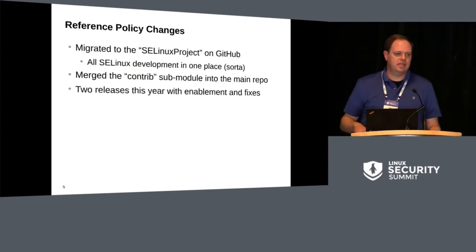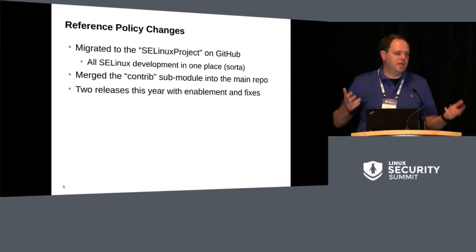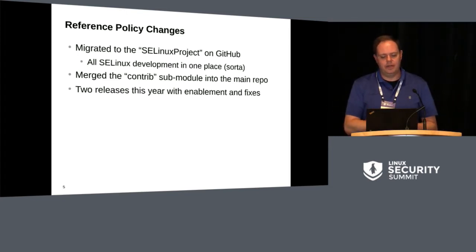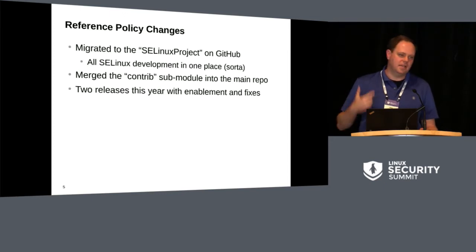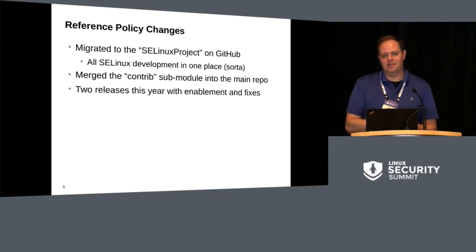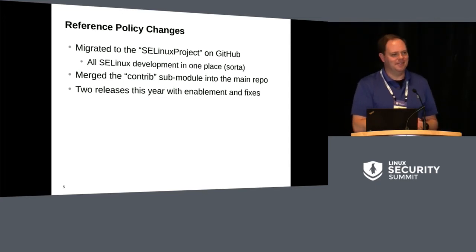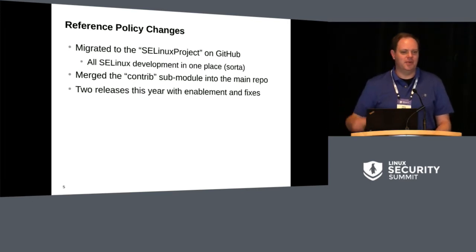As far as policy goes, probably the biggest thing is that the reference policy moved over to the SELinux project on GitHub. This is nice because we now have one central spot for all of our main SELinux upstream work. The kernel development still happens on kernel.org, but I do maintain a mirror on GitHub which allows us to use issue tracking, wiki, and all that. The other nice thing is we got rid of the git submodules — if you've done much with git submodules, you've probably learned to hate them — and just folded it all in, so it's one git module now.